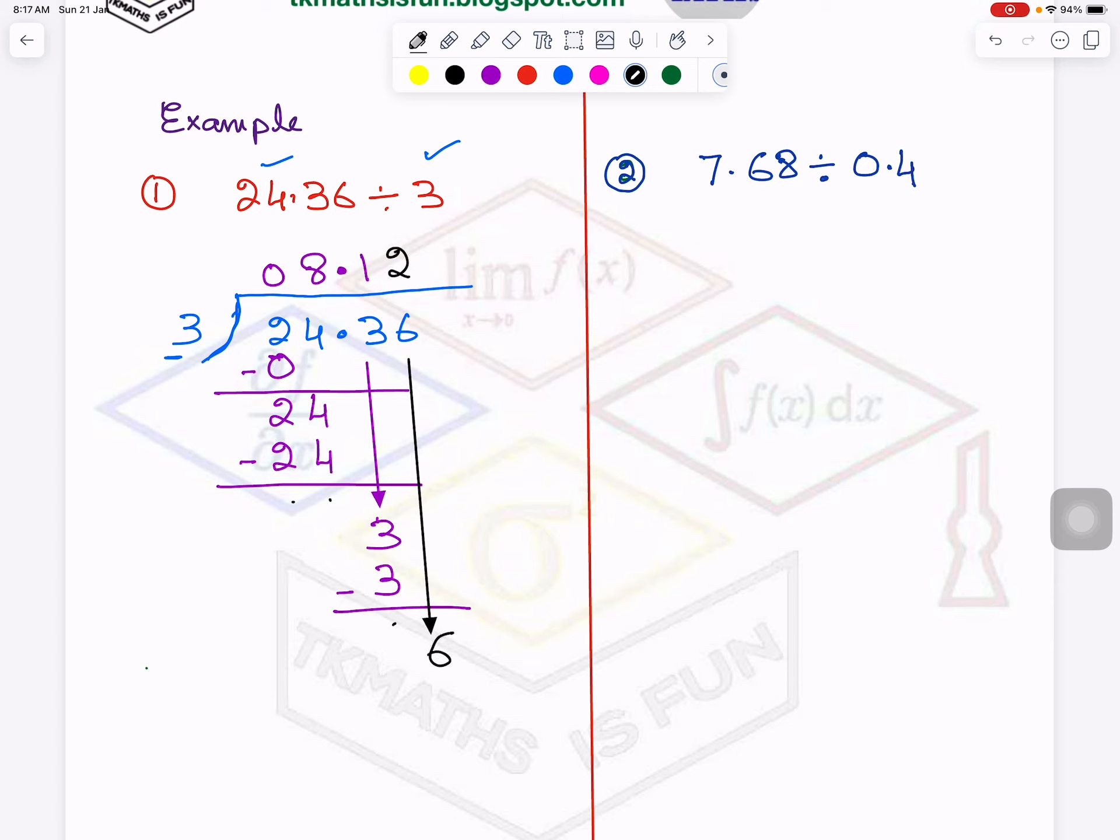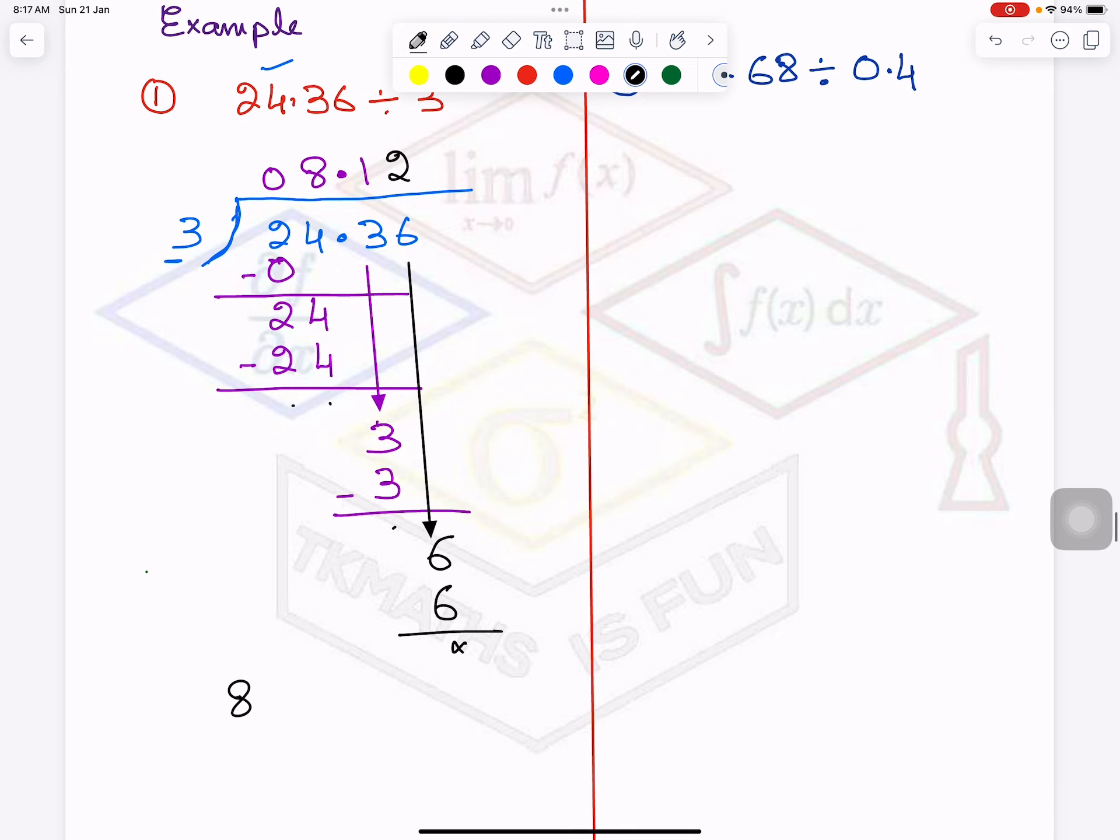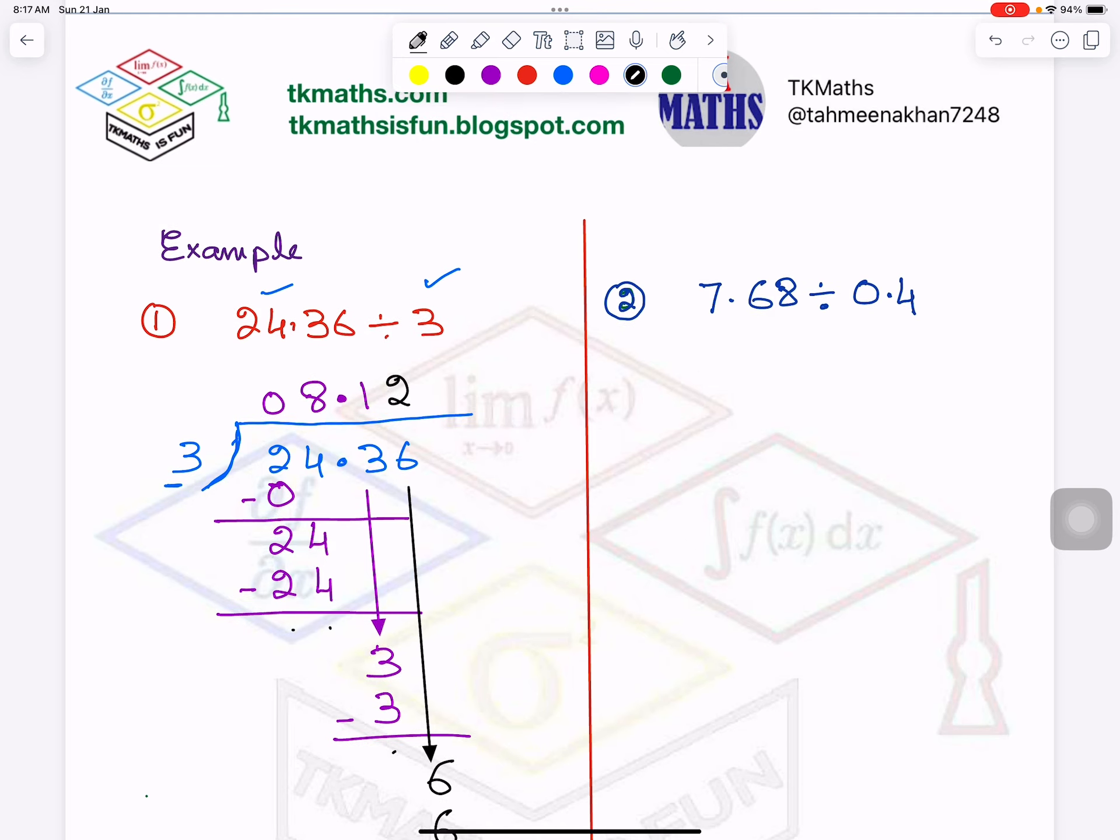So I am writing 6 straight away. So 3 to the 6. So my answer is what? 8.12 or if you want to write 08.12, you can write like that as well.